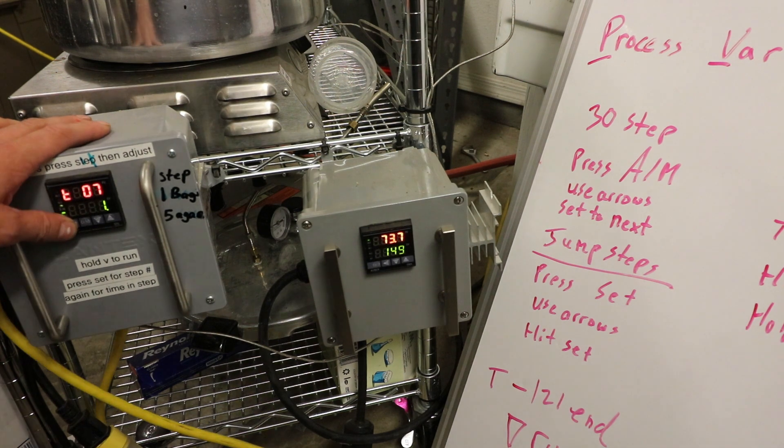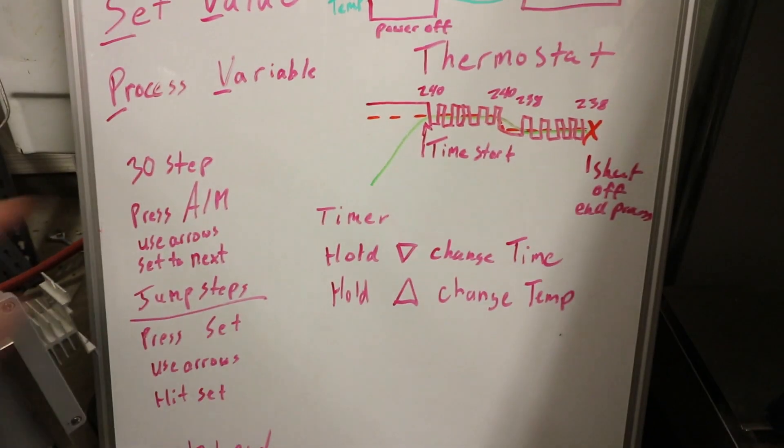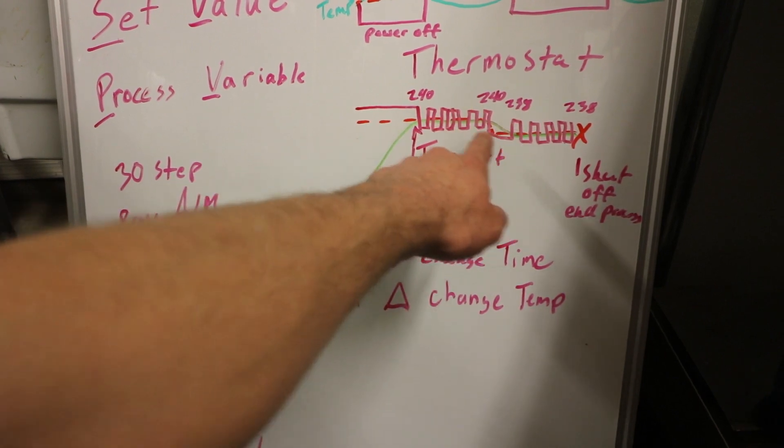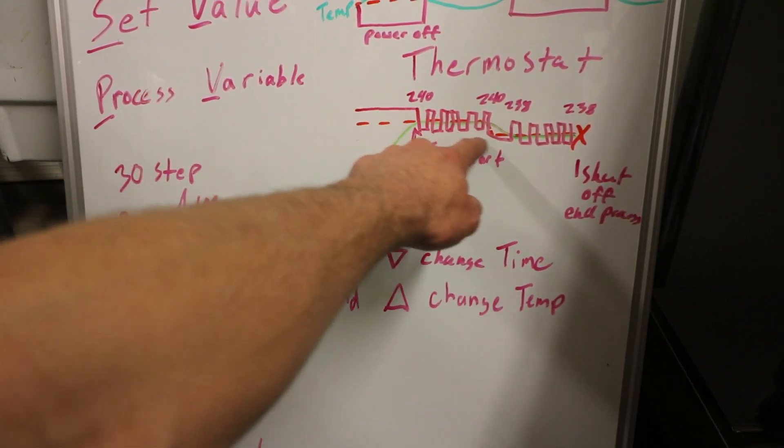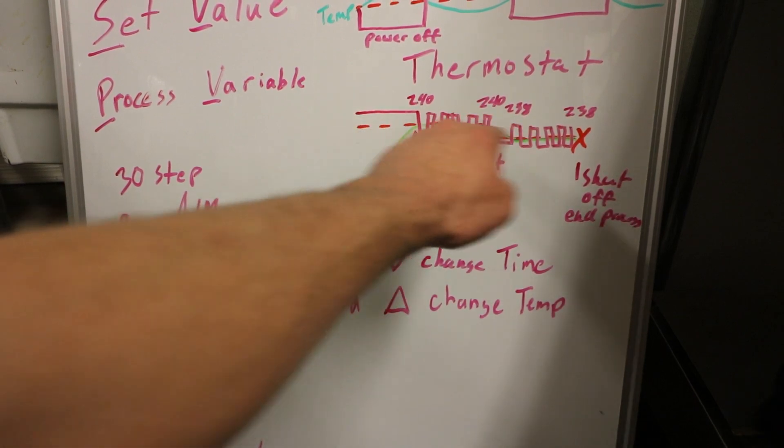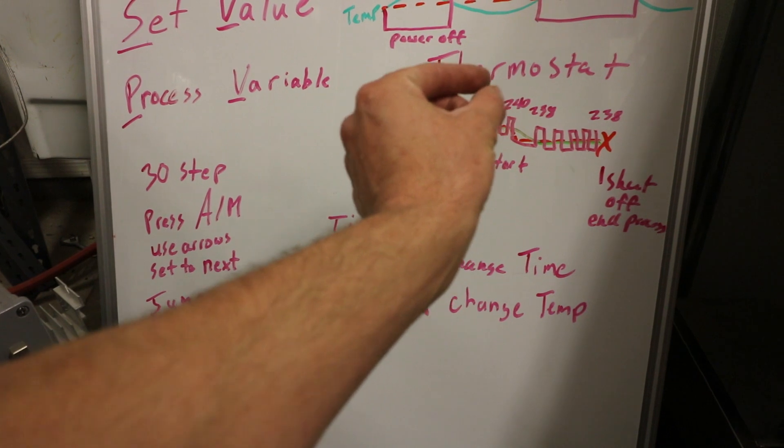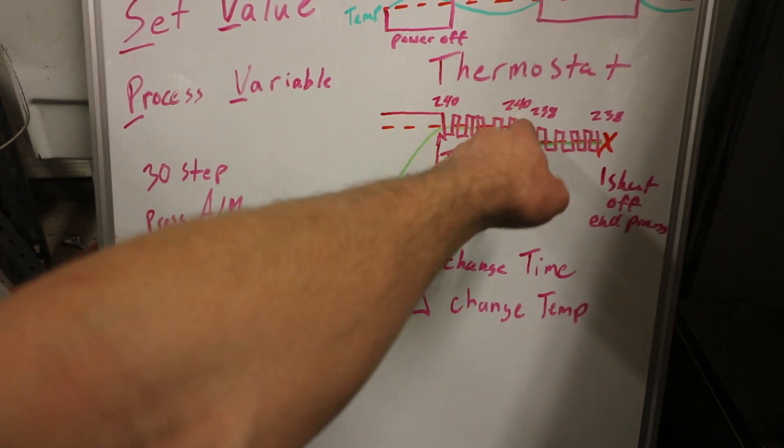So if you set, let's say step one at 240 and step two at 235, the whole time it'll slowly be lowering the temperature. If you want it to be steady, you have to have a little like one minute time where it's at the same temperature at the beginning from the end.